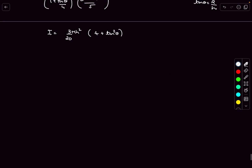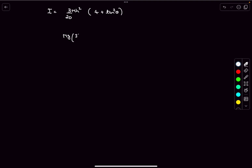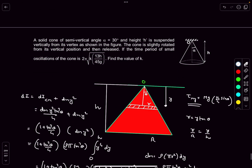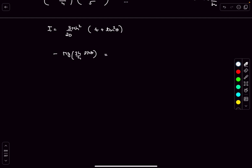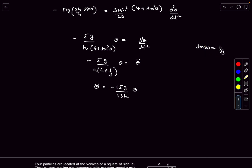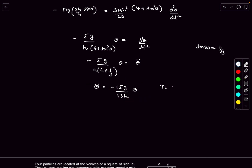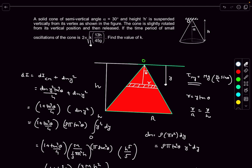Now knowing the torque due to mg = mg·(3h/4)·sinθ, taking the sign as negative (restoring, opposite to the displacement), and setting it equal to I·(d²θ/dt²), we get the equation of motion. Substituting the semi-vertical angle of 30° gives a differential equation of SHM. The time period of oscillation is T = 2π√(13h/(15g)), and comparing, k = 3.